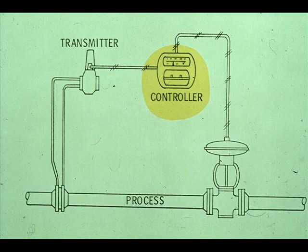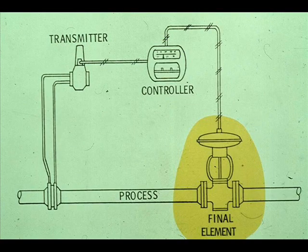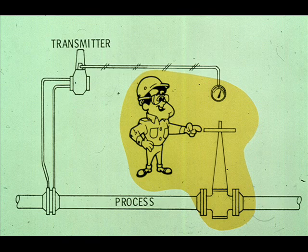The controller compares the transmitted signal with the set point, and then signals the control valve to open or close as necessary to hold the flow at the set point. The control valve, or final element, receives the signal from the controller and takes whatever action that the controller indicates is necessary. All of the control loops that we have examined are closed loops that provide continuous automatic control. If we remove any part of the closed control loop, it then becomes an open loop. This is an example of an open loop. A person has replaced the automatic controller. This operator reads the indicated flow on a meter, and then manually adjusts a hand control valve as needed to obtain the desired flow rate.